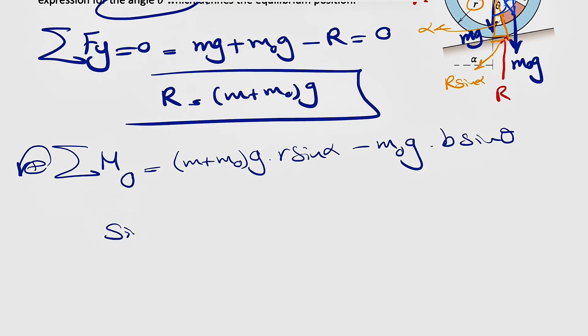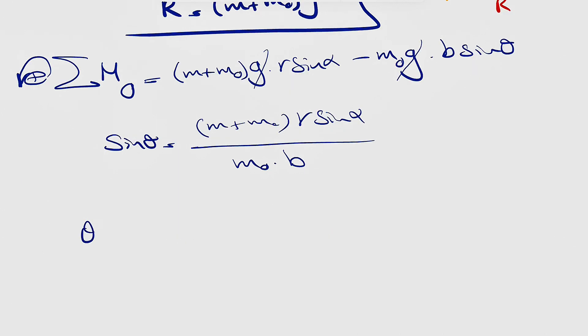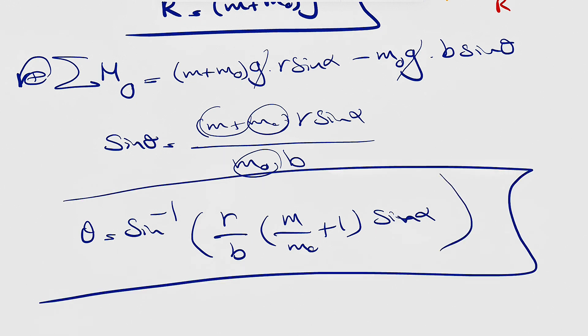Which if we just have sin θ in here, we're going to have, we can cancel out the g's, (m + m₀) r sin α divided by m₀ times b, and if you want to find θ, we basically have sin inverse, so we can divide each of these by m₀ as well, so what we're going to get is, we can take out the r over b, we can have m over m₀ plus 1 times sin α, and this is going to be the final answer for this question.